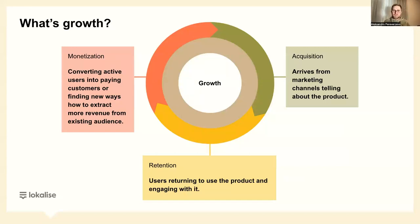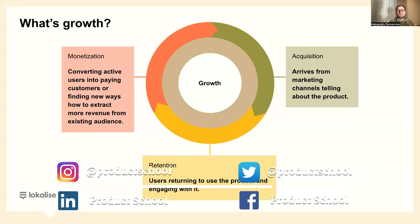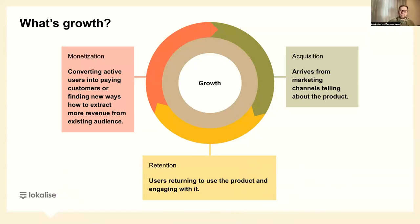Let's talk about growth. Growth consists of three main inputs — and this is a framework from Reforge, which I highly suggest everyone look at. They do an amazing job spreading the word about product management and growth. Your core growth engine is built on three pillars: acquisition, retention, and monetization. Rather than looking at growth as a funnel — the AARRR funnel — we encourage looking at it from a compounding loop perspective, because your growth engine is a combination of compounding loops that produce more growth over time.